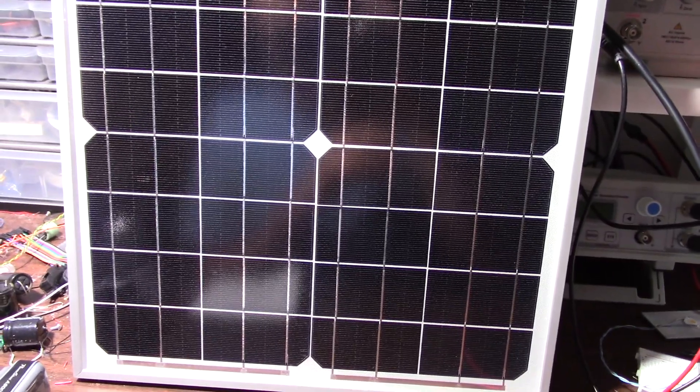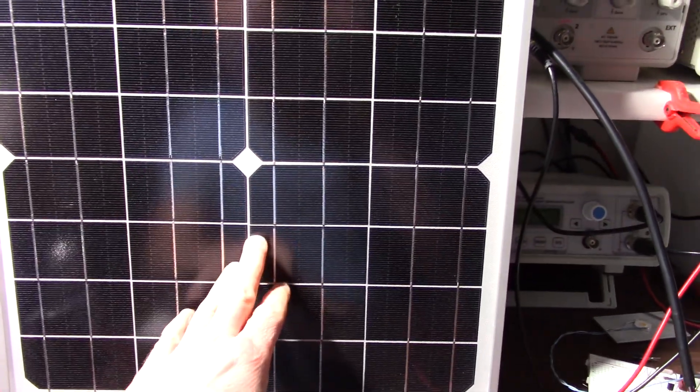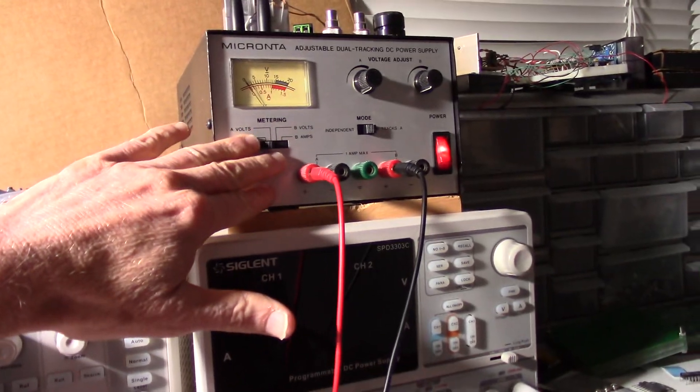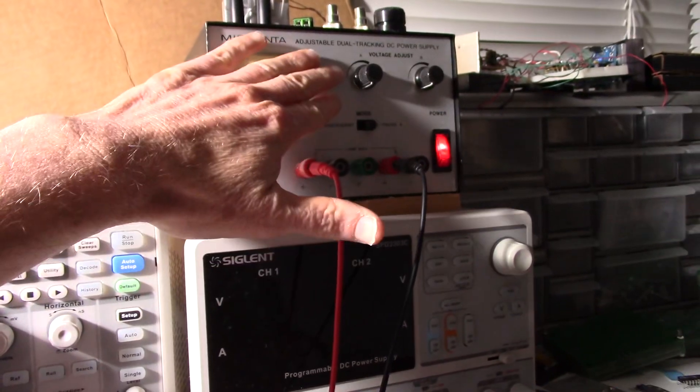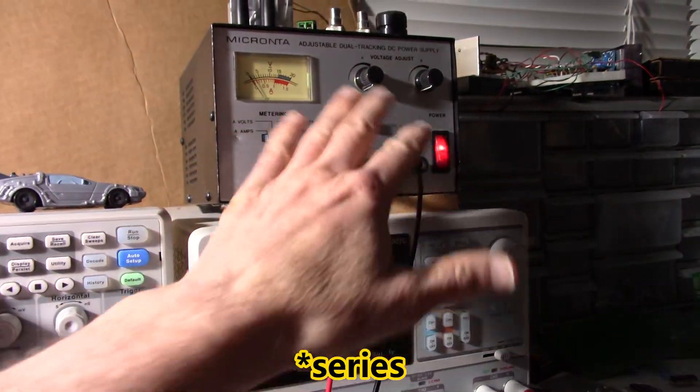Okay so now we'll try the solar panel. I have to set the supply for a higher voltage because I'm using this supply and it tops out at 15 volts so I can parallel the channels together and get a higher voltage.